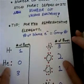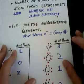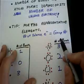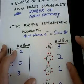And just a tip, for the representative elements, the number of valence electrons is going to be equal to whatever group number that that element falls in.